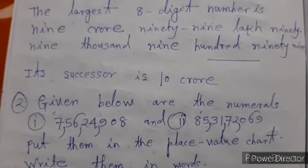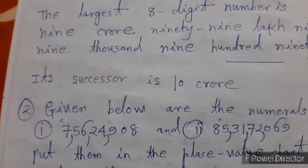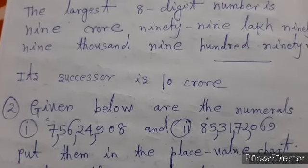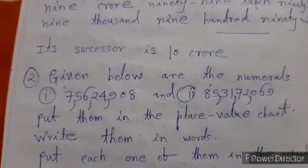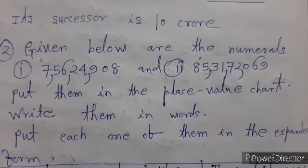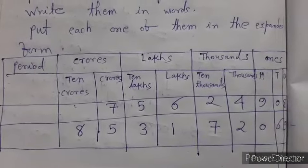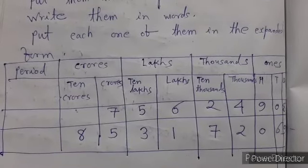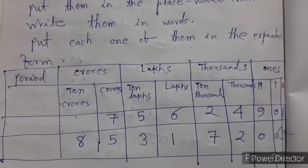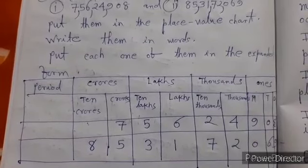Given below are the numerals 7 crore 56 lakhs, 24,908 and 85 crore 31 lakhs, 72,069. We want to put them in the place value chart. So write them in words. First we make a chart to show these numbers. We make a chart to indicate period such as crores, lakhs, thousands, ones.